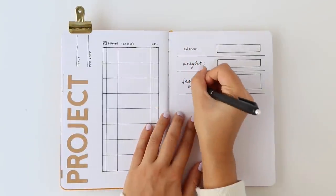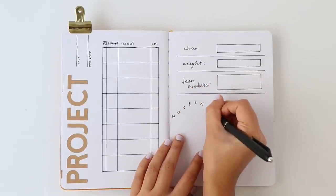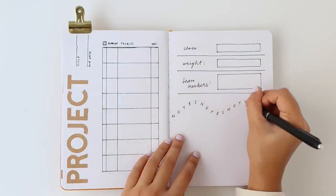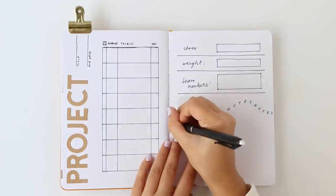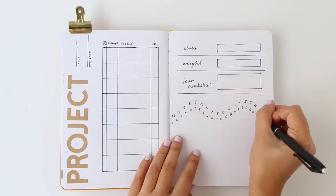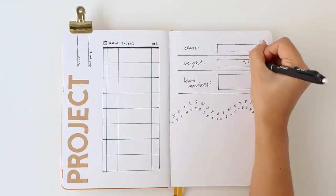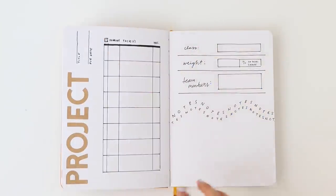On the right page is a spot to record which class the project is for, the weight of the assignment, i.e. what percentage of your final grade it is, and who your team members are. I kept the rest of the page blank to provide room for any notes that need to be jotted down about the project as you work on it. Having a note section is rarely ever something I regret having because there is inevitably at some point an important piece of information that pops up.